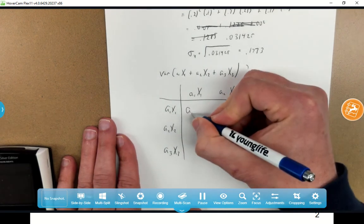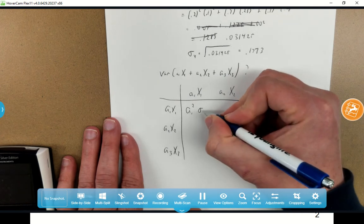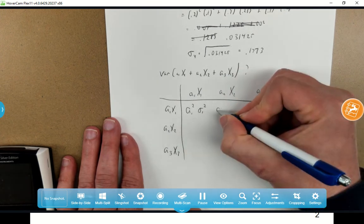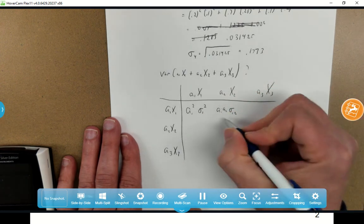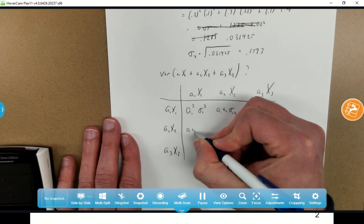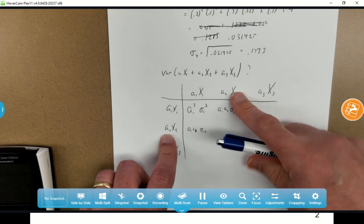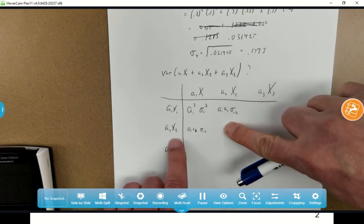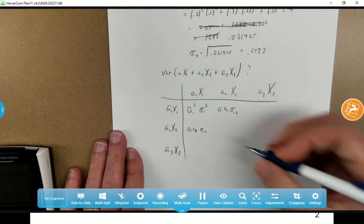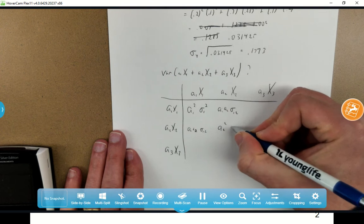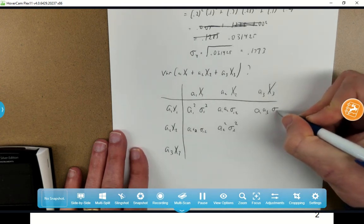What you're going to do is multiply these and get what the covariances will be. Here you get A1 squared sigma 1 squared. Here you're going to get A1 A2 sigma 1,2. And by symmetry, down here you're going to get A1 times A2 sigma 1 sigma 2. You just take whatever's in the row and whatever's in the column and multiply them together. Whenever you get like X2 times an X2, you're just going to get X2 squared. So this will be A2 squared sigma 2 squared. Up here will be A1 A3 sigma 1,3.